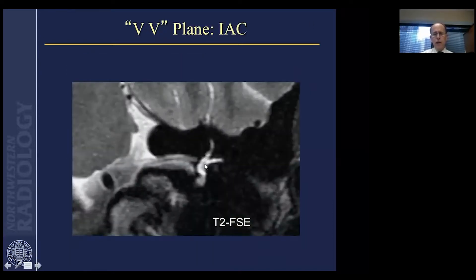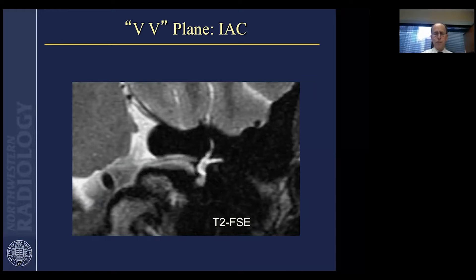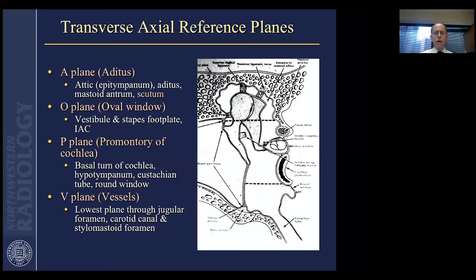A heavily T2-weighted coronal MR image shows that bone and air are all black, lacking the same detail seen on CT. However, fluid in the inner ear structures and the internal auditory canal is visible, with the cranial nerves appearing above and below the dark horizontal falciform crest.